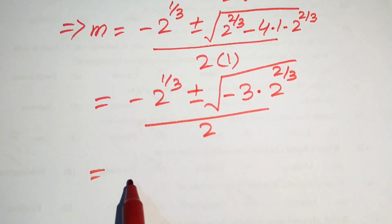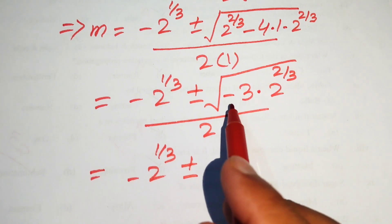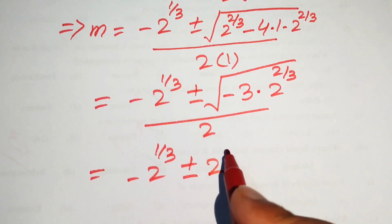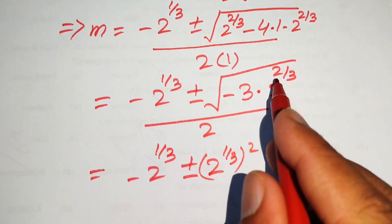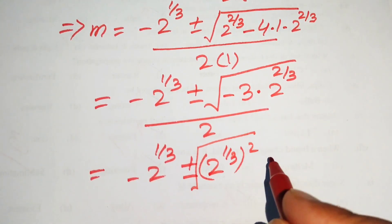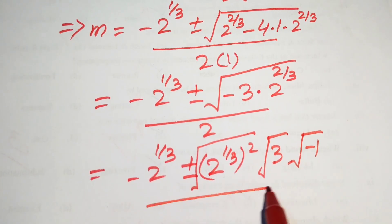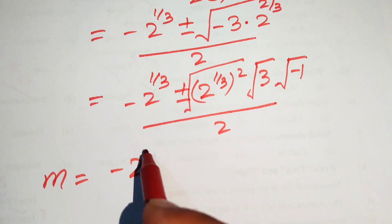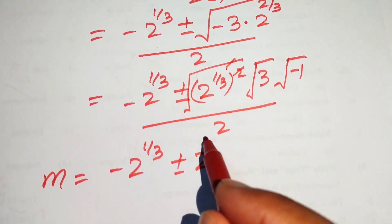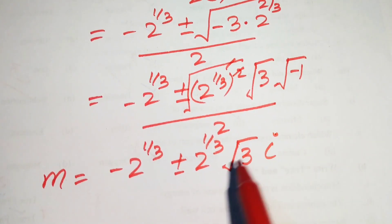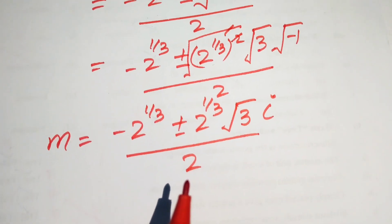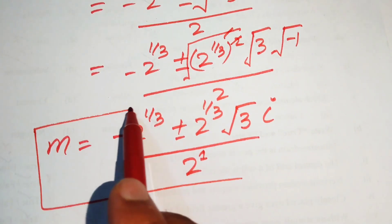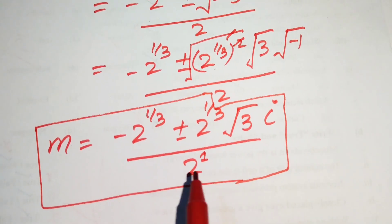Since the term under the square root is negative, it produces an imaginary component. We separate the square root over each factor, writing the result as m equals minus 2^(1/3) plus or minus 2^(1/3) times square root of 3 times i, all divided by 2. The solution is lengthy so we present this form and move on to our second equation.